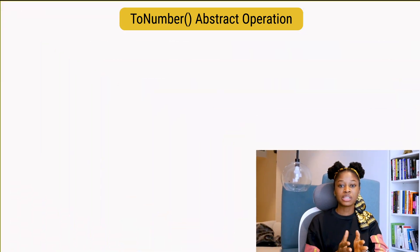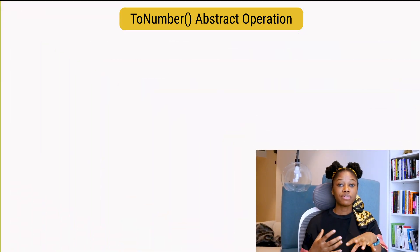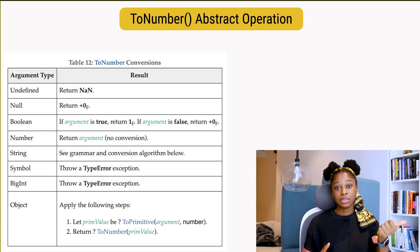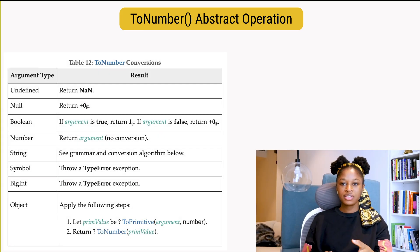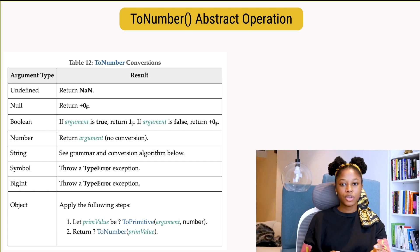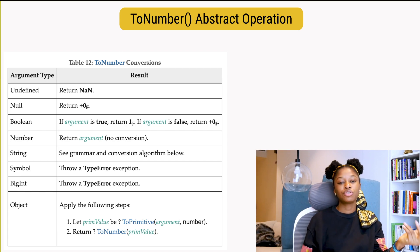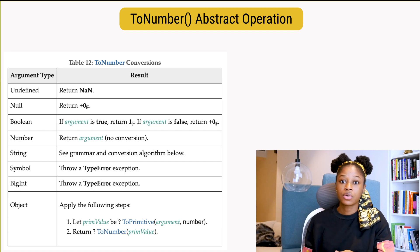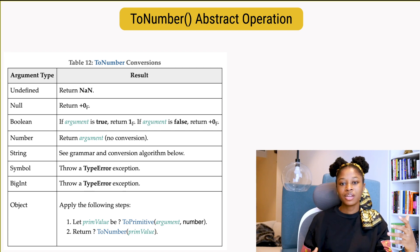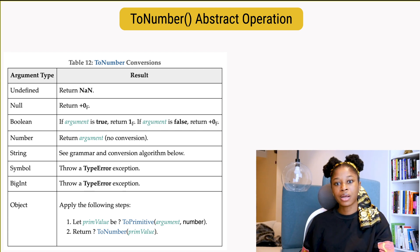The ToNumber abstract operation takes an argument and converts it to a value of type number according to a table in the spec. So undefined becomes NaN, null becomes zero, for booleans true becomes one and false becomes zero. If it's already a number, it just returns the argument and no conversion happens.